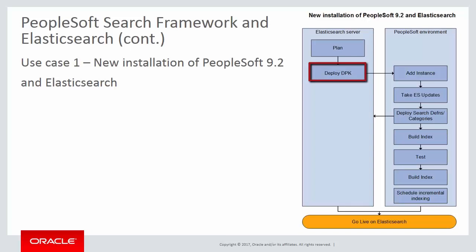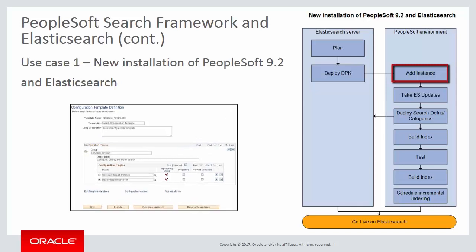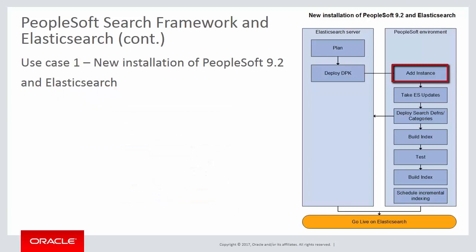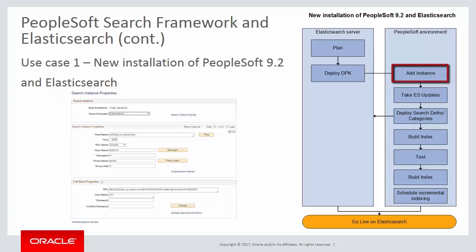Deploy the Elasticsearch DPK and run the configuration script on a Microsoft Windows or Linux host. Then sign in to PIA in the PeopleSoft application to create and verify a search instance for Elasticsearch. You can use the Automated Configuration Manager to run a template to create a search instance, or alternatively use the Search Instance Properties page.